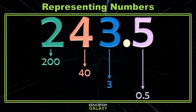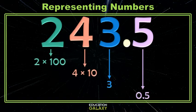Now we want to write each of those as a product based on their place value. So my 200 is 2 times 100. My 40 is 4 tens. My 3 is 3 ones. And can you guess what my 5 is? Well it's 5 times 1 tenth. Makes sense, right?